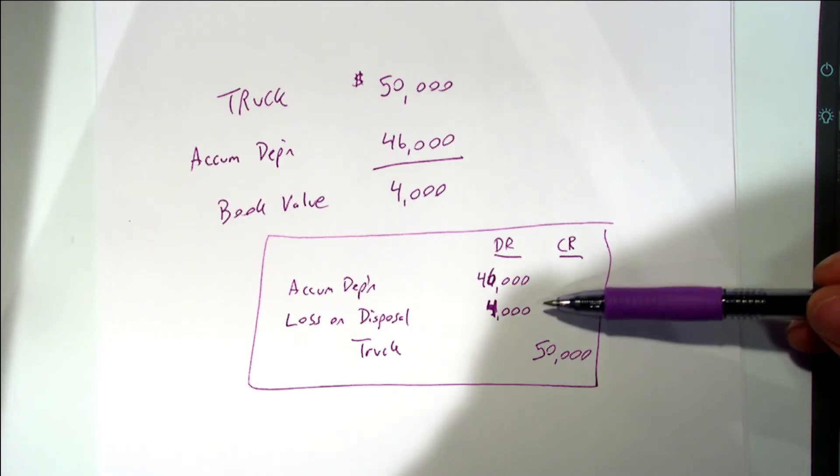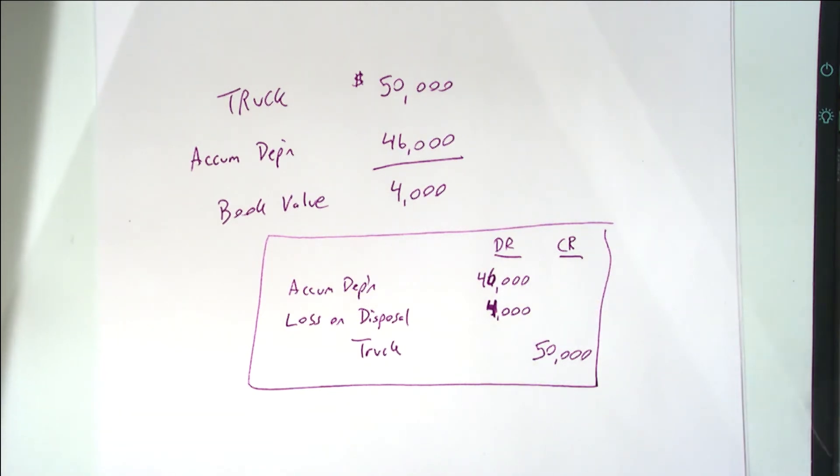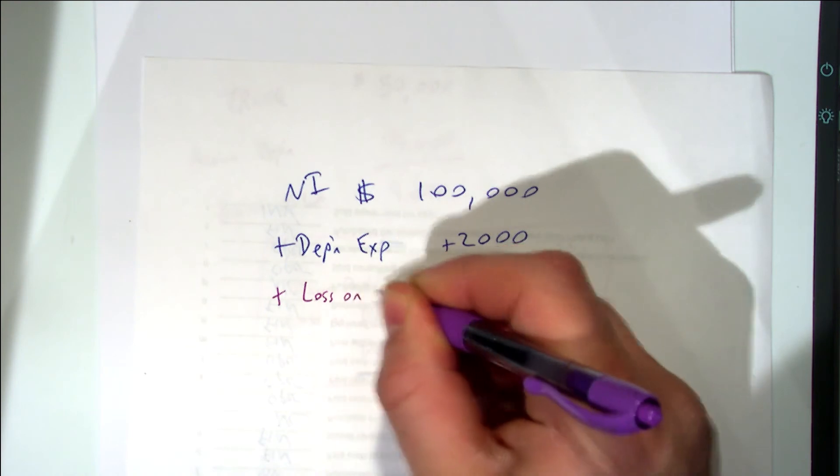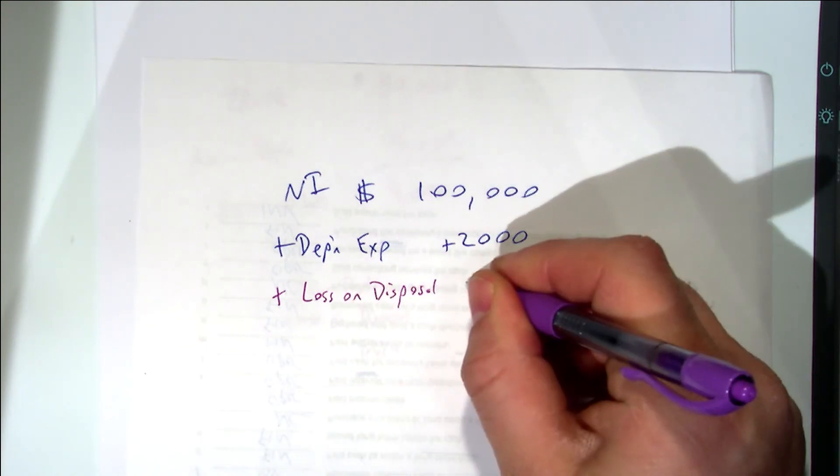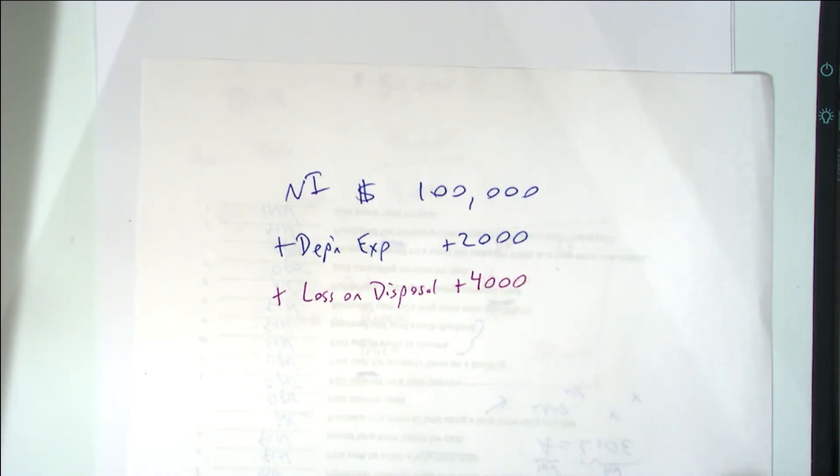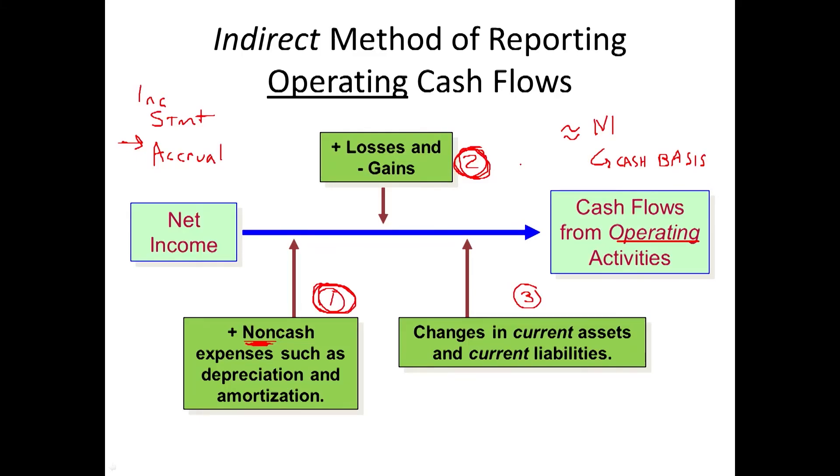So we have to add that loss back. So what we would do is this. We would say plus loss on disposal. And then we would add how much was it? Four thousand? Four thousand. You see what I'm saying? And if it was a gain we would subtract it for the same reason. Because it wasn't an additional cash inflow even though on our income statement it was added in arriving at net income. So we add back our losses and subtract out our gains. In moving from this income statement accrual number to the net income on a cash basis number. Does this make sense?